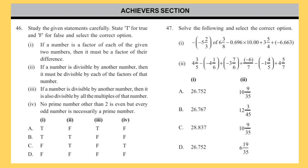Here is the Achiever Section — each question carries two marks. Question 46: Study the given statements carefully, state T for True and F for False, and select the correct option. Statement 1: If a number is a factor of each of the given two numbers, then it must be a factor of their difference. Statement 2: If a number is divisible by another number, then it must be divisible by each of the factors of that number. Statement 3: If a number is divisible by another number, then it is also divisible by all the multiples of that number. Statement 4: No prime number other than two is even, but every odd number is necessarily a prime number.